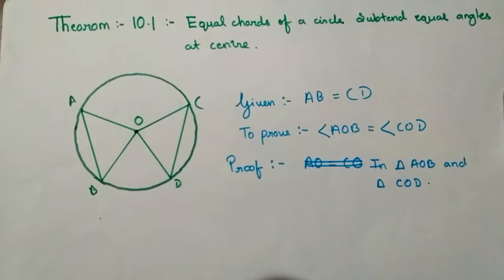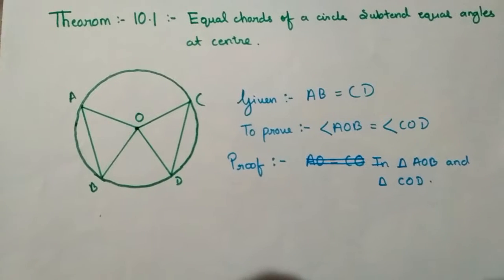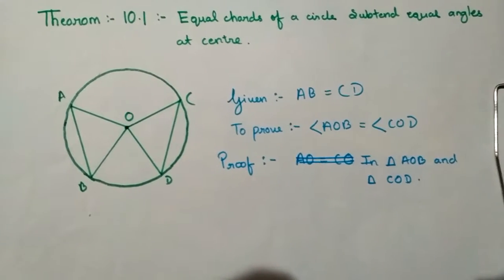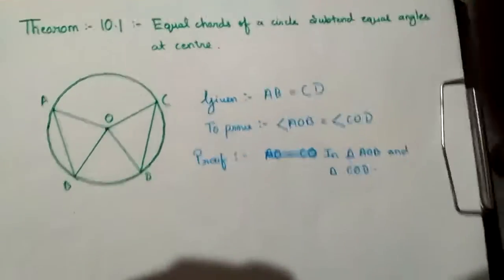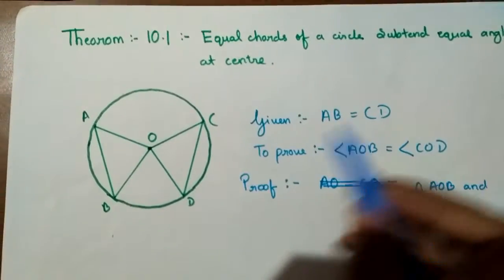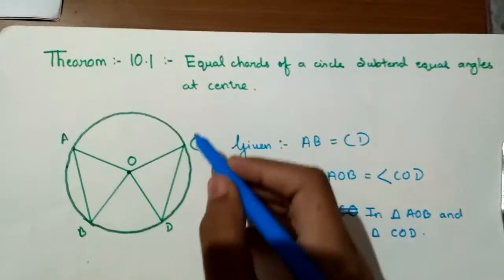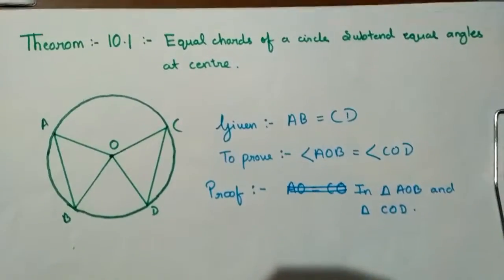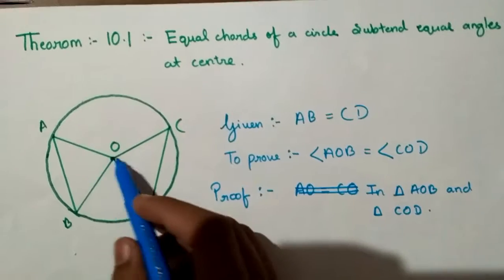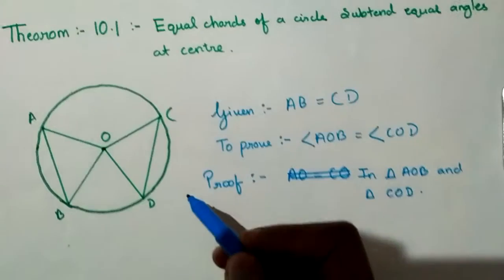To prove this, I have drawn a figure here. This is a circle and O is the center. It is given that AB is equal to CD, where AB and CD are the two chords of the circle. We have to prove that angle AOB is equal to angle COD.